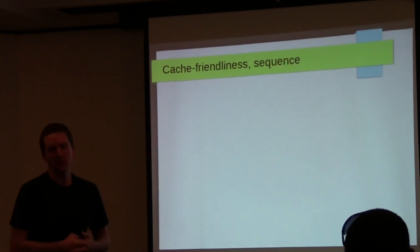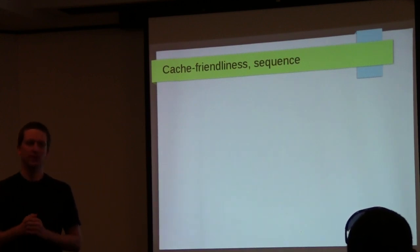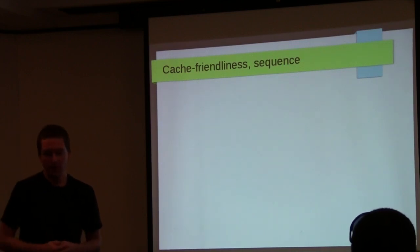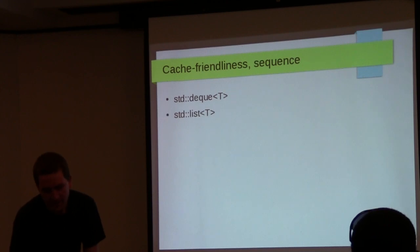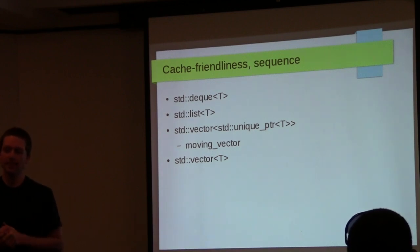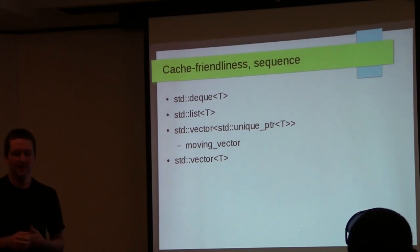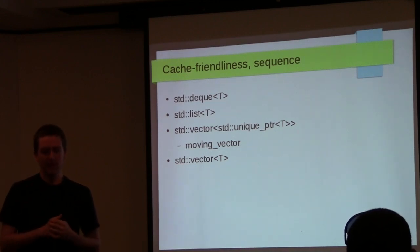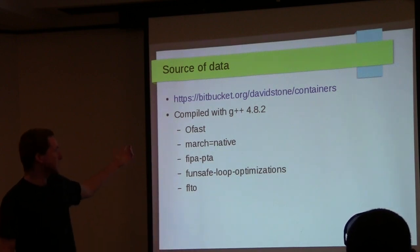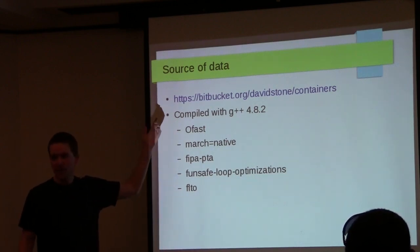I want to get into the performance of containers with regards to how they allocate memory. I'll look at the sequence containers: deque, list, vector, and also a vector of unique_ptrs — sometimes called a 'moving vector' because it moves elements indirectly. The code for the tests that generated the graphs is available at the URL provided. Tests were run with GCC 4.8.2 on an Intel i5 machine.